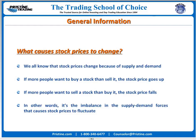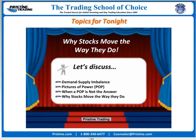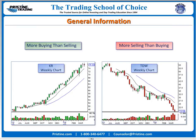Supply-demand imbalance is what causes prices to change. I wrote these slides on the weekend — all current as of last night. Here's the weekly chart of KR and the weekly chart of TDW — uptrend, downtrend.